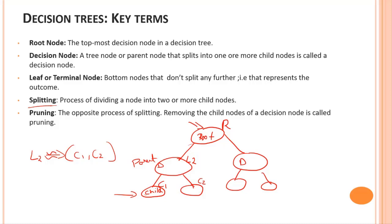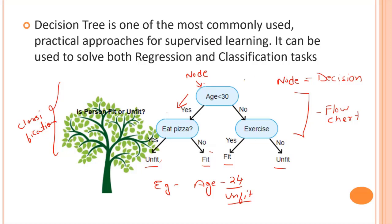Let's map those terms back to the fit/unfit example. The top node — age — is the root node. The exercise and eat-pizza nodes are decision nodes or interior nodes, and they are also parent nodes for the nodes below them. The outcomes — fit and unfit — are the leaf nodes. Age is both the root node and the parent node for the child nodes below it.